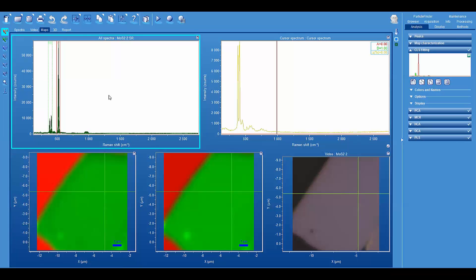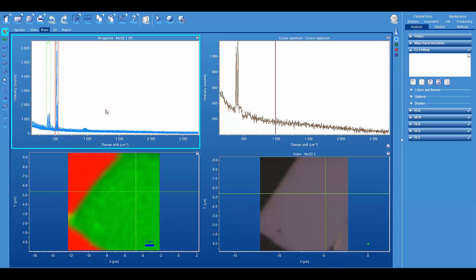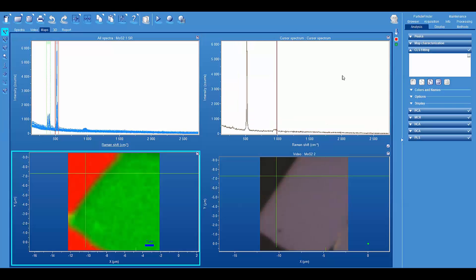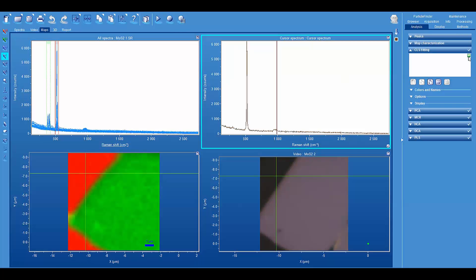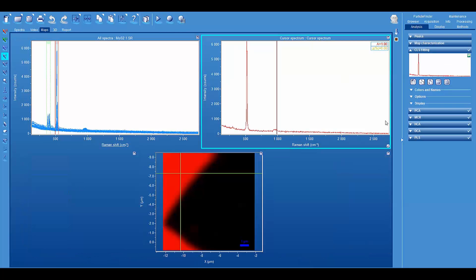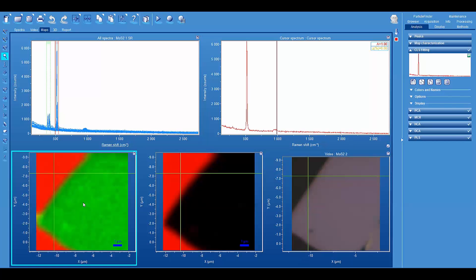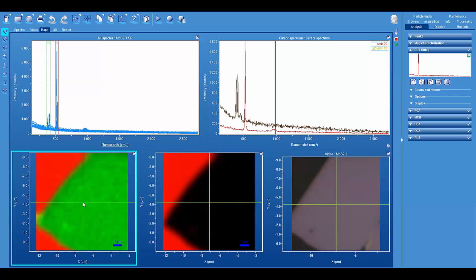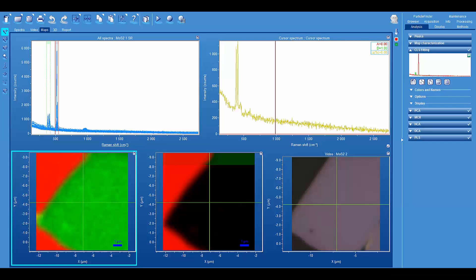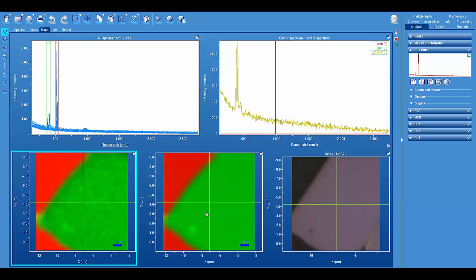Alright, so let's go back to our hyperspectral data set. This is for one second. Now let's look at the results from 100 millisecond integration time. And so let's run again our classical least squares. Click on an area of molybdenum disulfide, enter that component, and there you see the image.